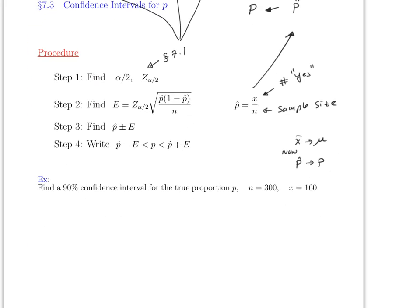This is probably 95 percent the same as section 7.1. For example here, it says find a 90 percent confidence interval for the true proportion. So this is how you know you're doing 7.3 and not 7.1. The first thing you have to figure out is what p hat is. So p hat will be 160 divided by 300, which is 0.53.